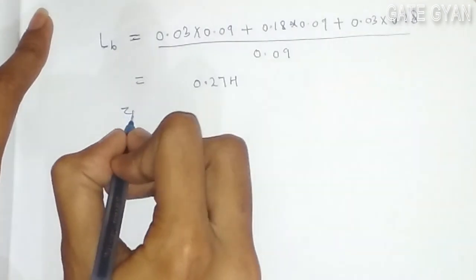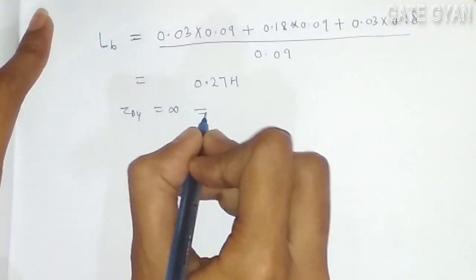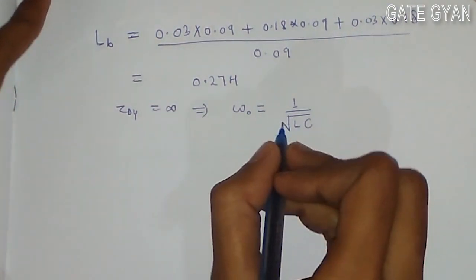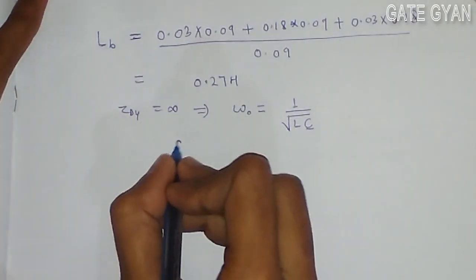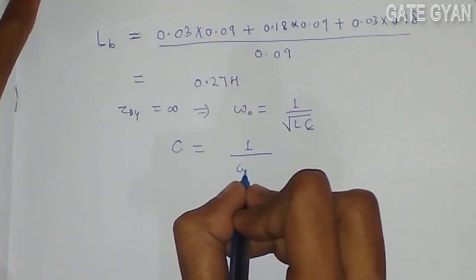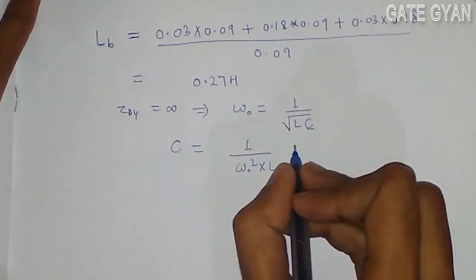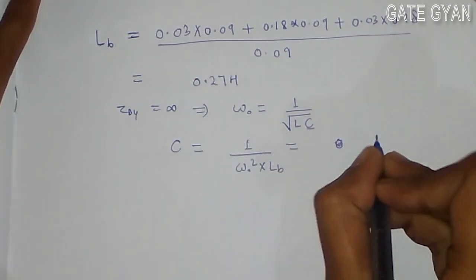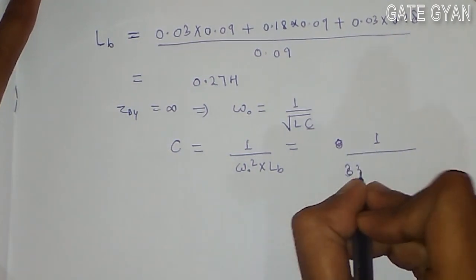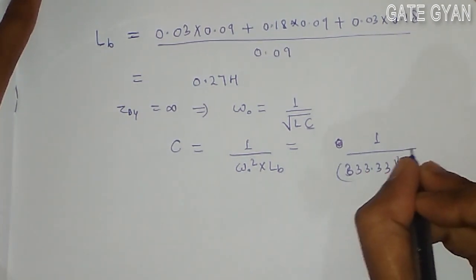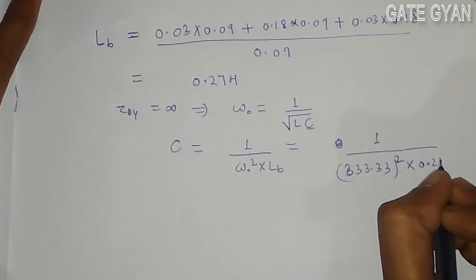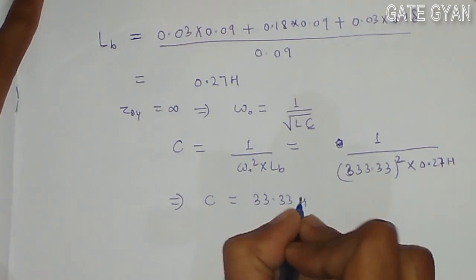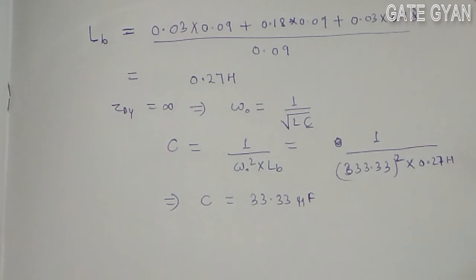Now as the dynamic impedance is infinity, it implies that circuit is in resonance condition. So omega will be 1 upon square root LC. So we have to get from here this capacitance value. So capacitance value will become 1 upon omega 0 squared into LB. So we will get our capacitance value as 1 upon omega 0 value is 333.33 squared, in microfarad, and 0.27 Henry. So here we will get our value of capacitance as 33.33 microfarad by solving this. So our answer is 33.33 microfarad.